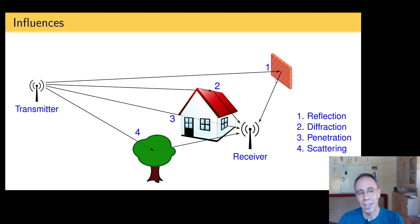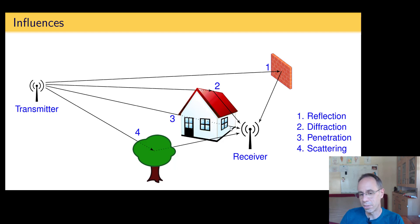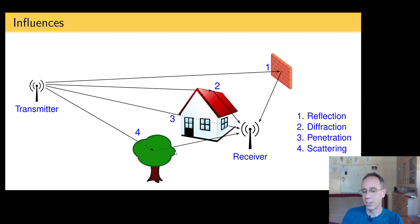There are a lot of influences on the transmission range. There is reflection on walls, for example — this is sometimes even used by mobile providers to get a better signal in special areas. We have diffraction, where signals travel around edges. There is also penetration, which reduces signal energy after passing through objects. And we have scattering, where hitting an object sends the signal in multiple directions, reducing its power because it splits into more signals.